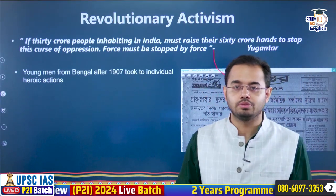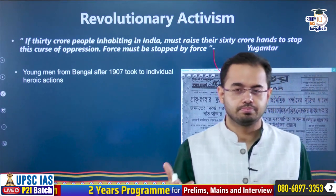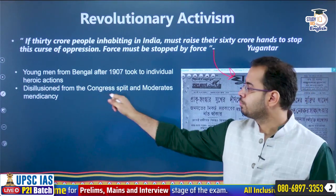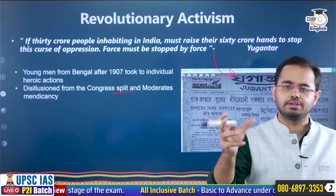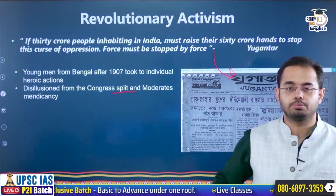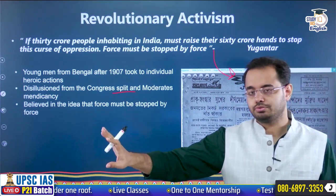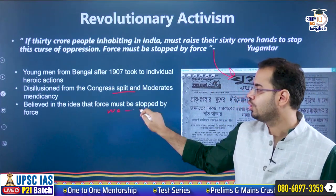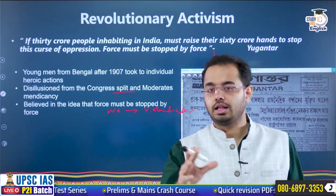Young men from Bengal were choosing the acts of individual heroic activism — revolutionary activism. Why was it happening? Number one: people were disillusioned from Congress. Extremists and moderates were fighting with each other, unable to understand the shrewdness of Britishers. What is the use of such a nationalistic political party? We would rather do our own job and not depend on politicians. Second, they believed in the idea that force must be stopped by force — if Britishers are ruling with violence, we should also have a violent attitude towards Britishers. At this point of time, Gandhiji was not there in India.